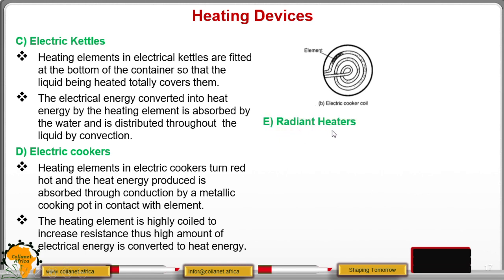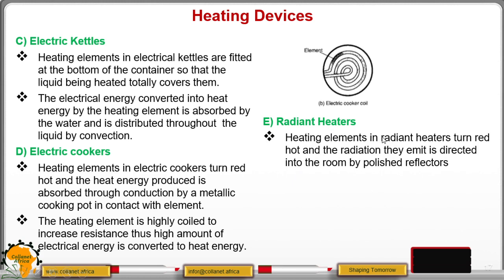Then we have the radiant heaters. Now, heating elements in radiant heaters turn red hot. And the radiations they emit is directed into the room by polished reflectors. Now, radiant heaters will help to warm the rooms. So, we have it like this one. We have the mains road where you are connecting. We have the bright metal reflector, these parts.